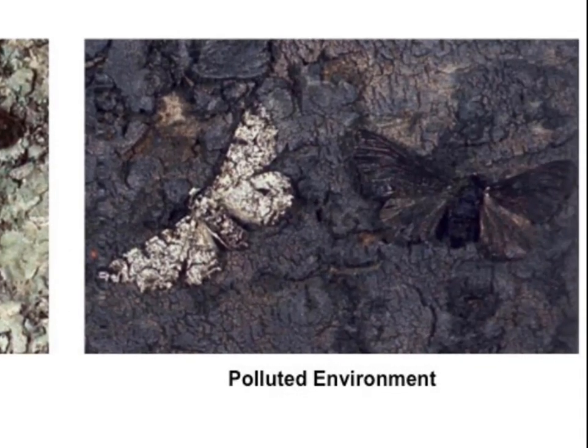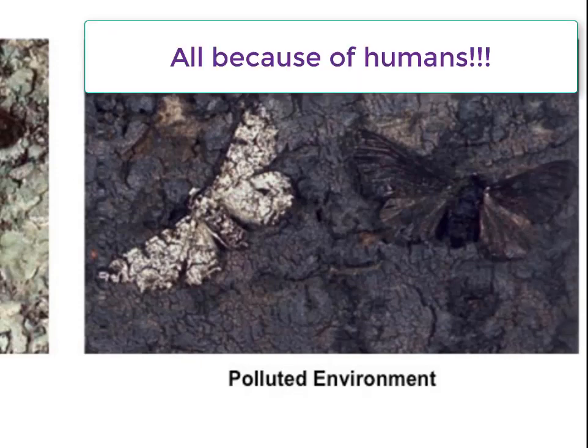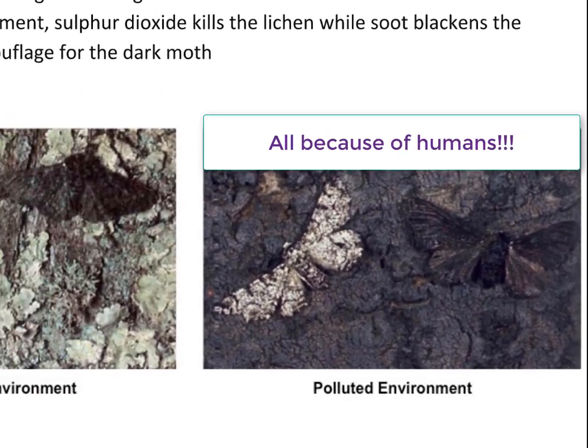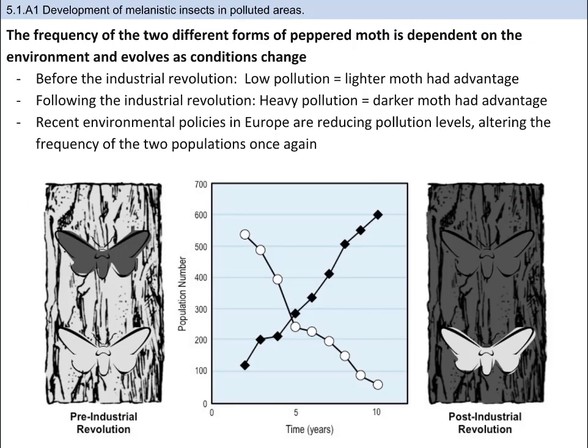However, in polluted environments, the lichen cannot live, and soot from pollution covers the tree, making it darker. The lighter colored moths are now more easily spotted, while the dark colored moths survive more and pass their coloring onto their offspring. As you can see in the graph, darker colored moths became more common. Humans influenced the environment, and the moths better suited for that specific environment survived to reproduce and pass their color trait. When the pollution started to be controlled, the number of darker moths decreased and the number of lighter moths increased. This is a classic case of human-caused changes influencing evolution.